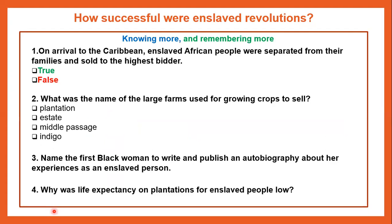On arrival to the Caribbean, enslaved African people were separated from their families and sold to the highest bidder. Is this true or false? What was the name of the large farms used for growing crops to sell? Plantation, Estate, Middle Passage or Indigo?